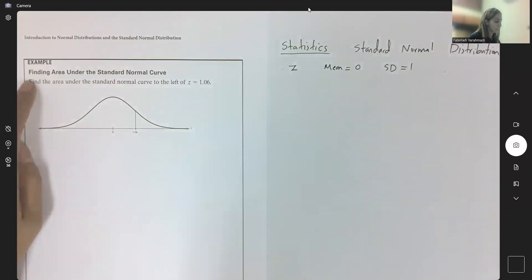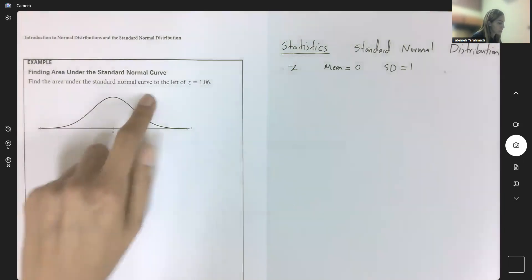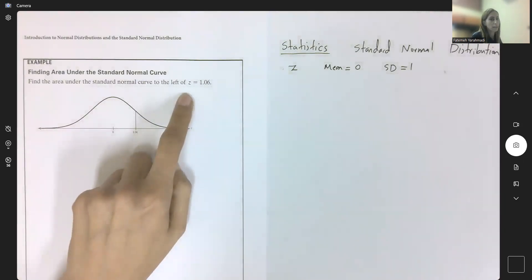In this example, we are interested in finding the probability, or basically the area under the standard normal curve to the left side of z. What is my z?